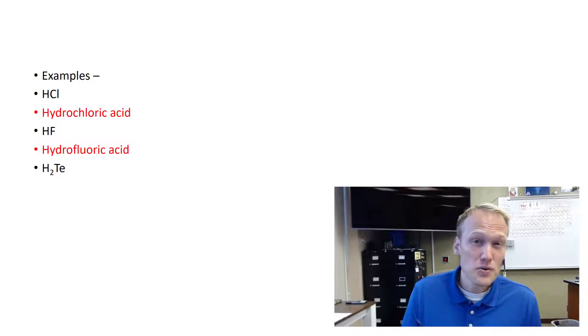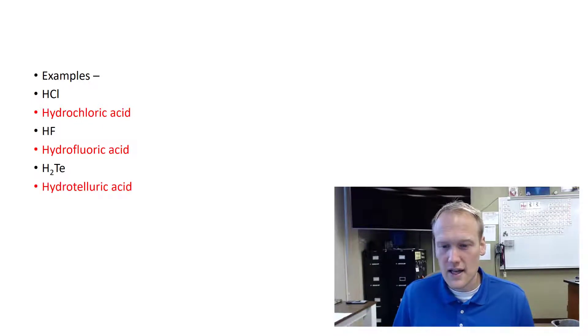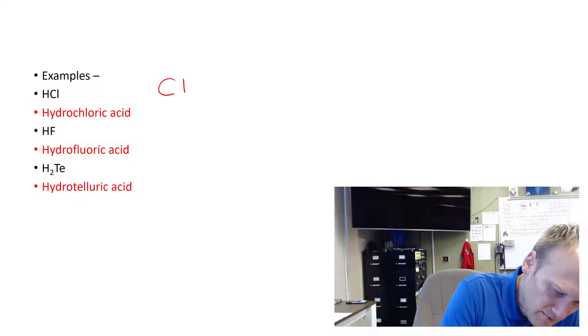Here's an H2Te. So what would this be? It would be hydrotelluric acid. And you might be thinking to yourself, why is it H2 that time and the other time it was just one H? Well, chlorine is a minus one. Fluorine is a minus one. But if you look at tellurium,